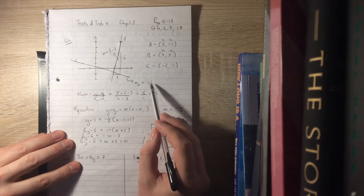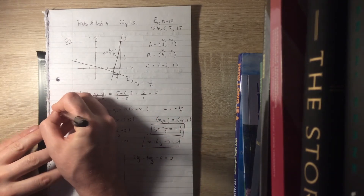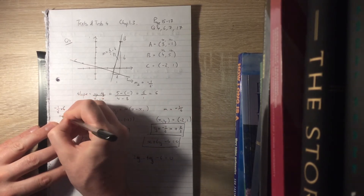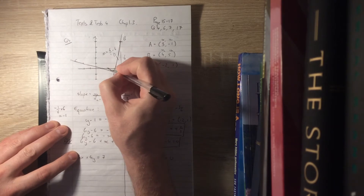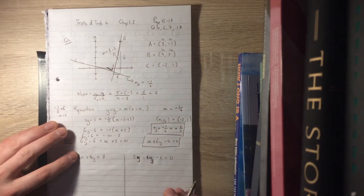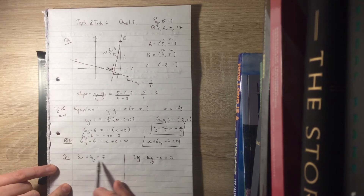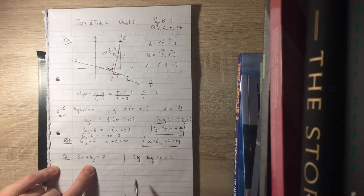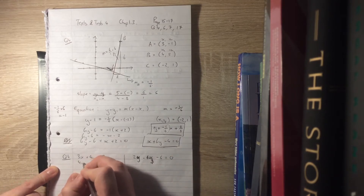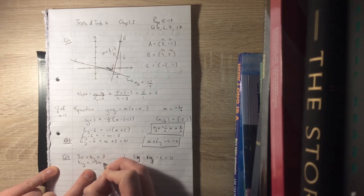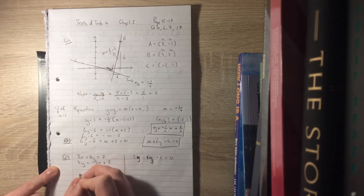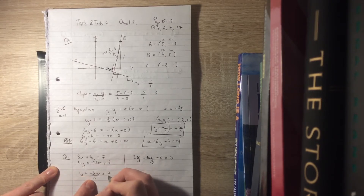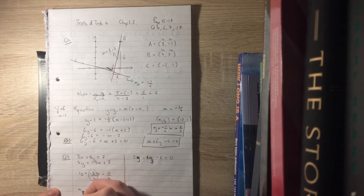For example, minus 1 sixth times 6 gives minus 1. Anytime two lines are perpendicular, the product of their slopes is minus 1. So to get the slope I'll write in the form y equals mx plus c. For the first line, 3x plus 4y equals 7 becomes 4y equals minus 3x plus 7, so y equals minus 3 over 4 times x plus 7 over 4. That gives m₁ equals minus 3 over 4.